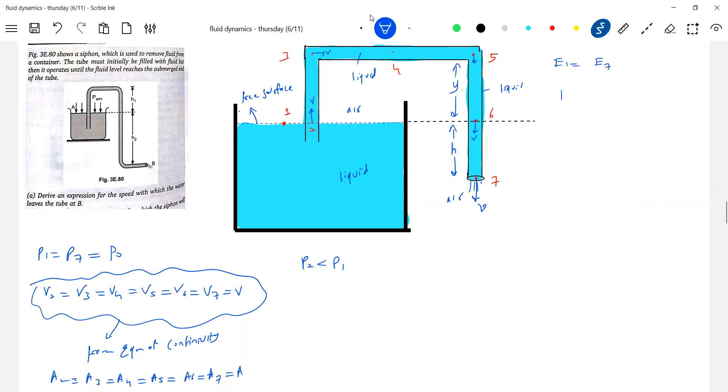So now let me apply Bernoulli between E1 and E7. What is the pressure at 1? P0. Potential energy, 1 is at higher level compared to this. So we will write P1 plus U1 plus K1, P7, U7 plus K7. Pressure at 1, P0. Potential energy is rho GH. And what is the state of liquid at 1? At rest. Pressure at 7, P0. Potential energy is 0. Rho V square by 2. So what is V equal to? Root 2GH. So with this much of velocity, the liquid will come out here.